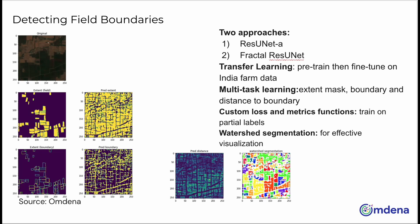Both models relied on transfer learning. The teams first trained them using public data from Europe. The pre-trained models were then fine-tuned on Indian farm data provided by our partner FarmHand.